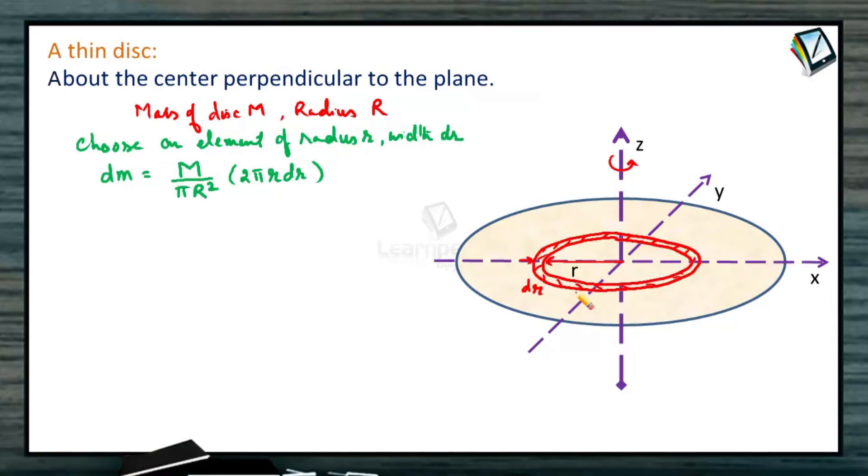Moment of inertia of this ring element about the axis, we know I is equal to mr square. So dI is equal to dm, the mass of the ring, into the radius of the ring r square.